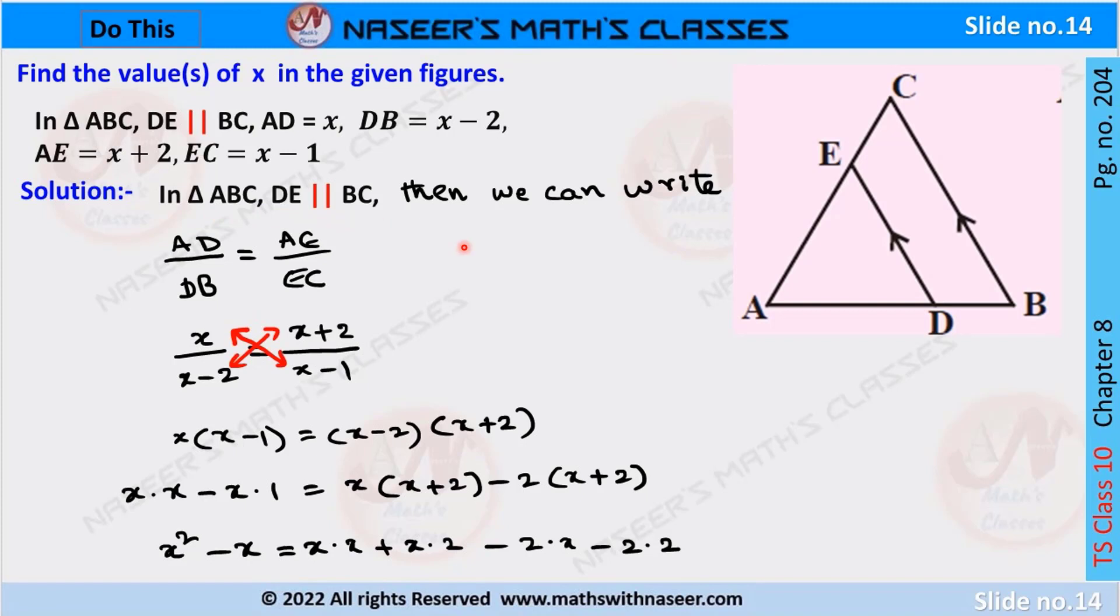DE is parallel to BC. Then we can write ratio of the corresponding sides are equal. Then we can write AD by DB is equal to AE by EC.